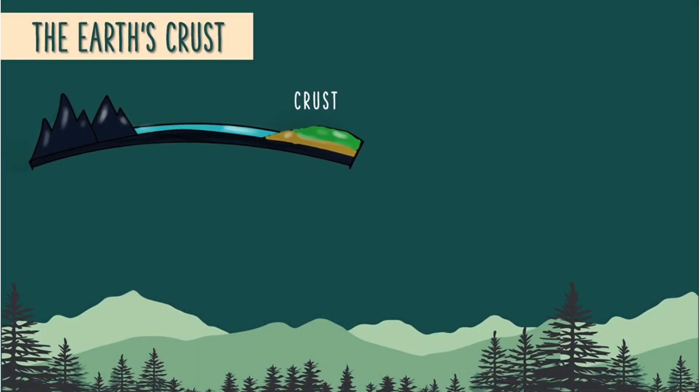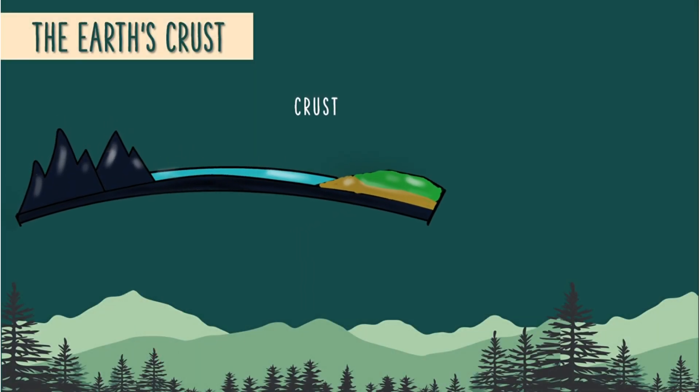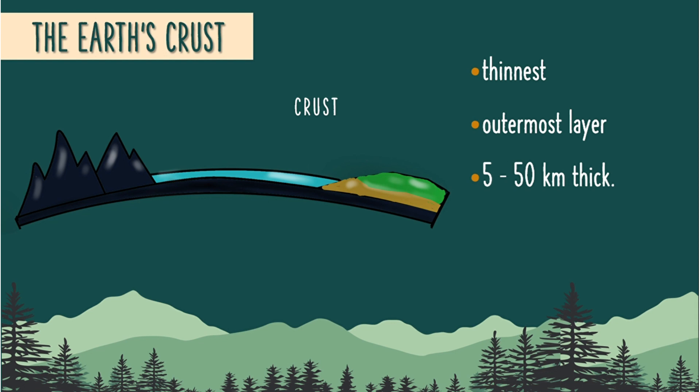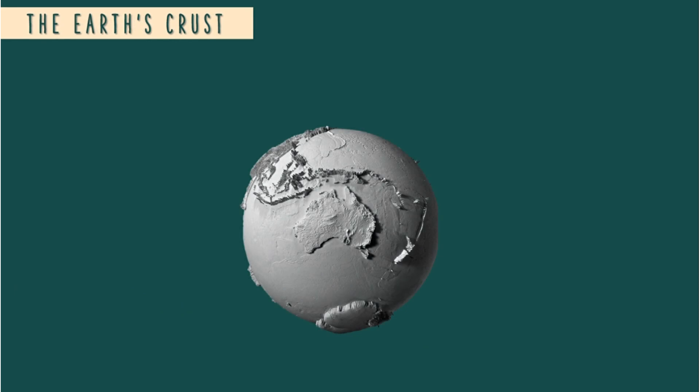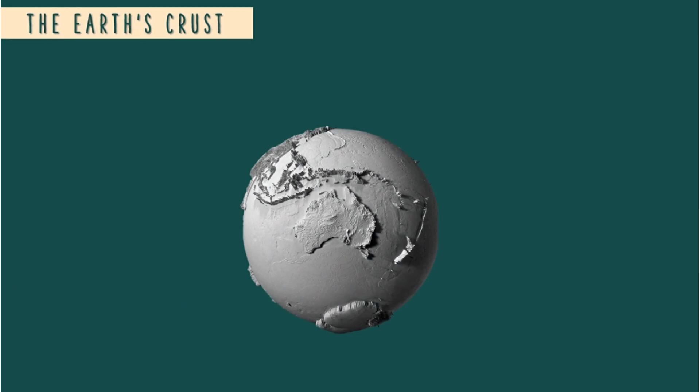The crust is the thinnest and the outermost layer of the Earth. It is about 5 to 50 kilometers thick. The crust is made up of both continental and oceanic crust.